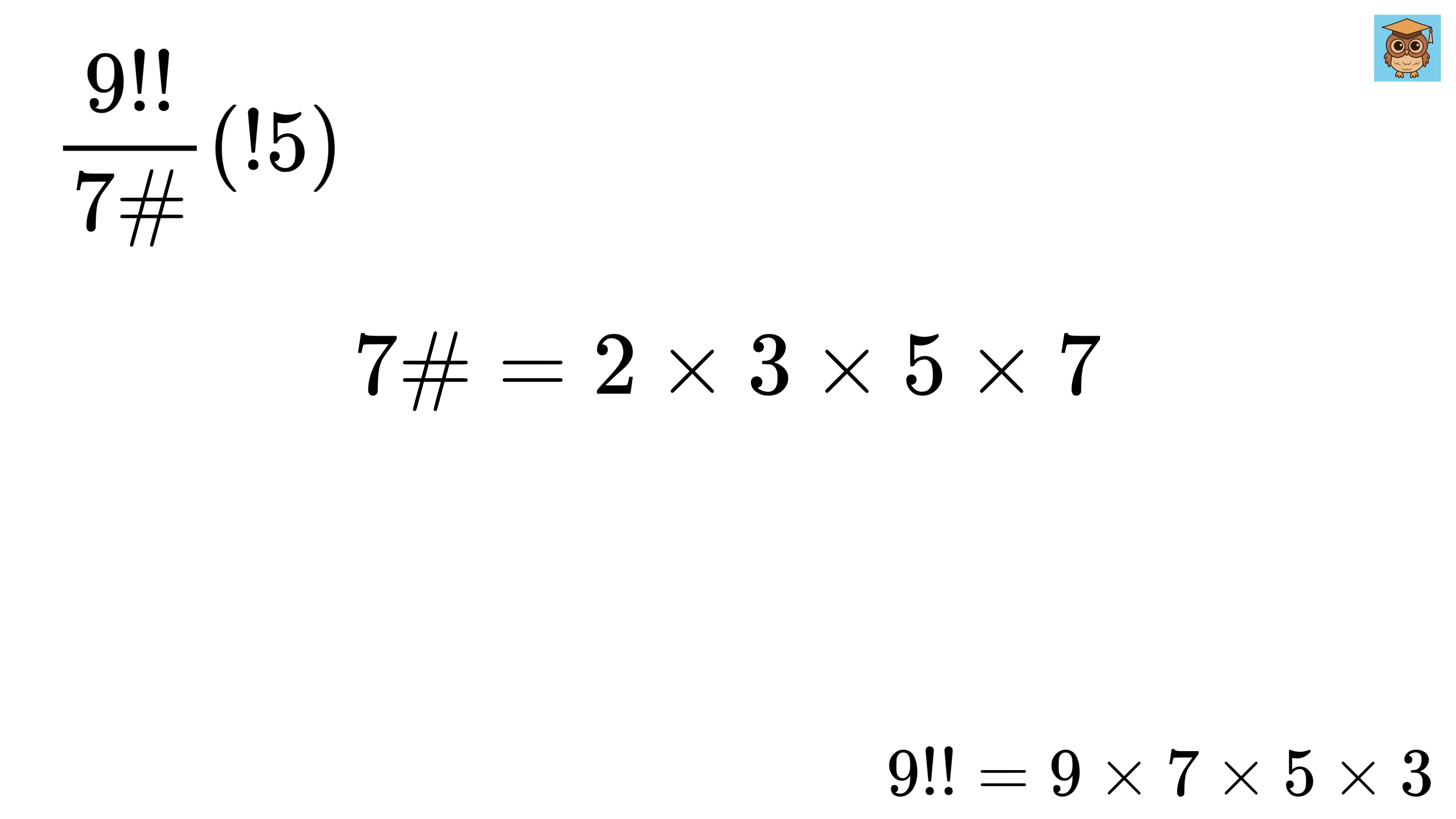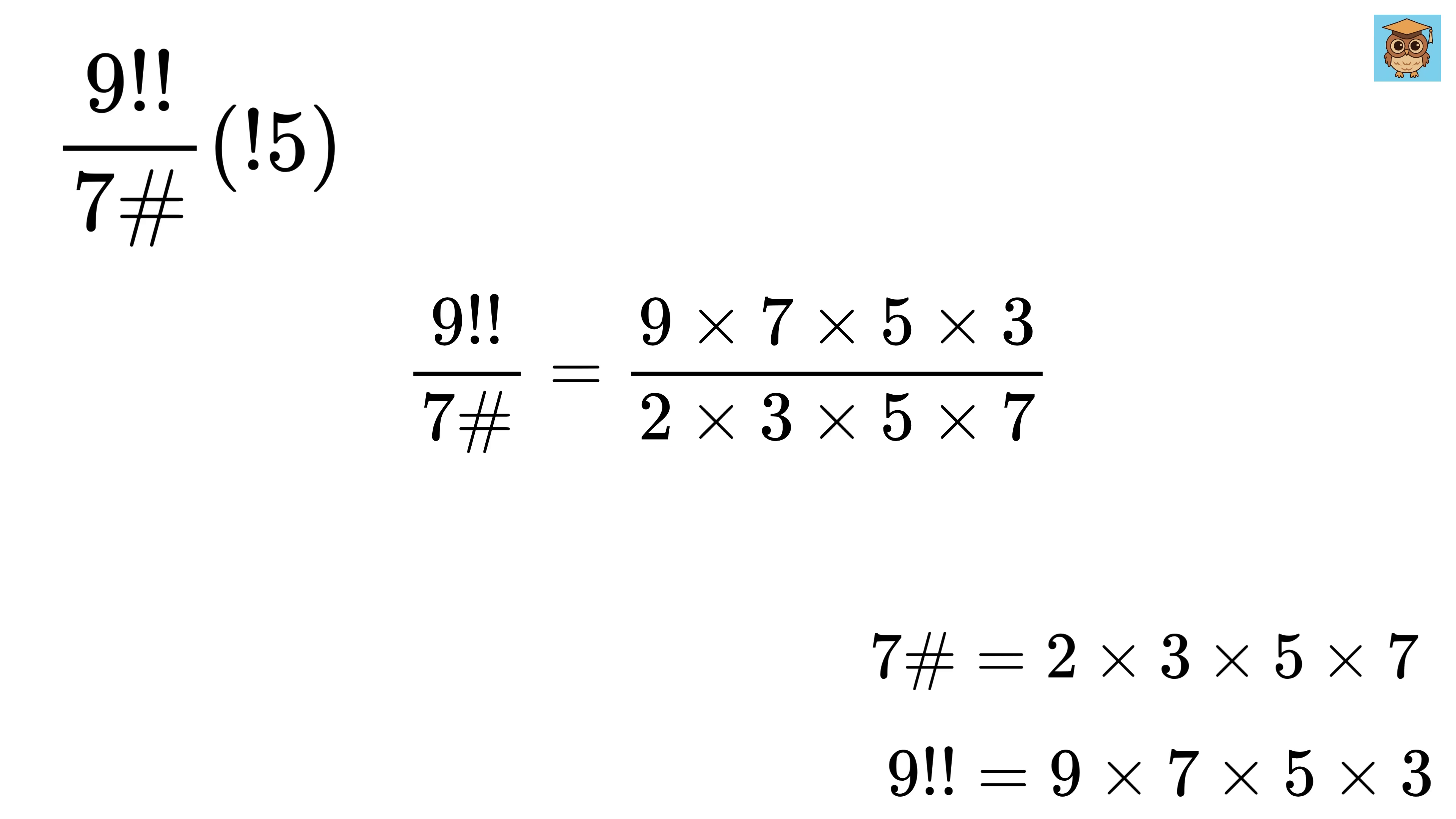Since they are prime numbers, we leave the product as it is. To simplify this, when we divide 9 double factorial over 7 primordial, we get this. Oh, look, 3, 5, and 7 cancel out, leaving us with 9 over 2.